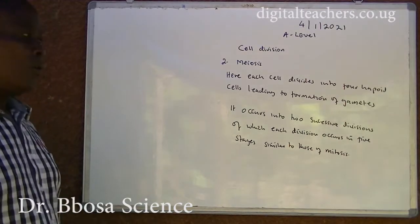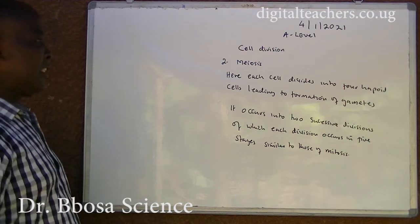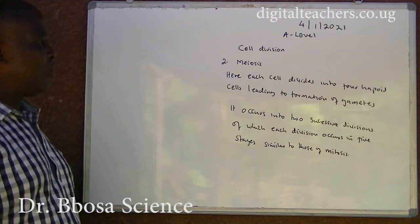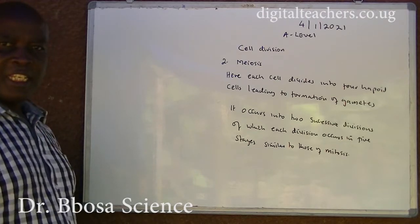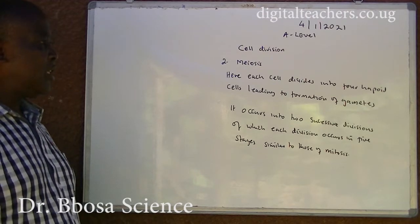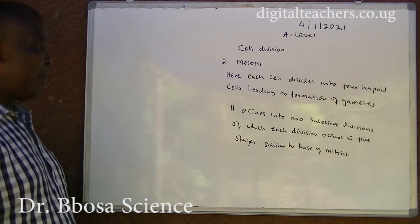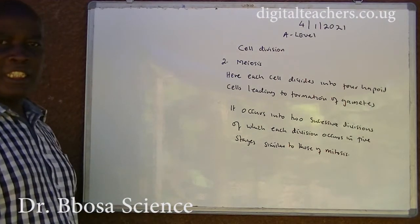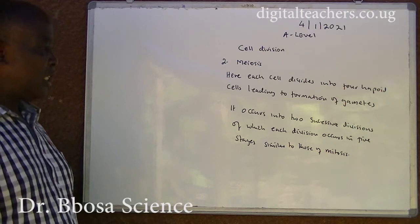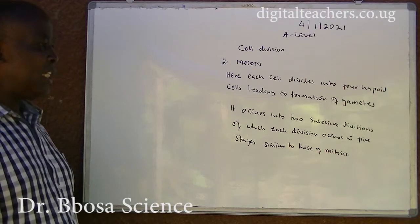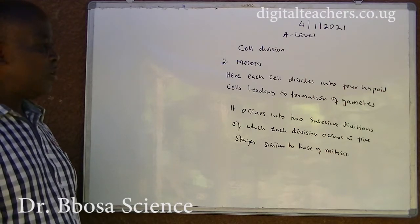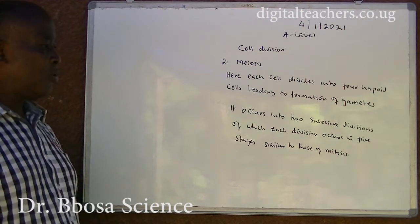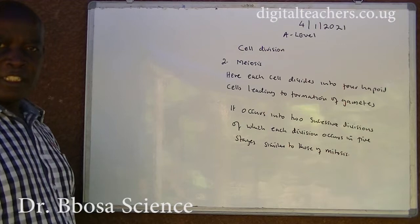Meiosis: here, each cell divides into four haploid cells, leading to the formation of gametes. It occurs in two successive divisions, each division occurring in five stages similar to those of mitosis.